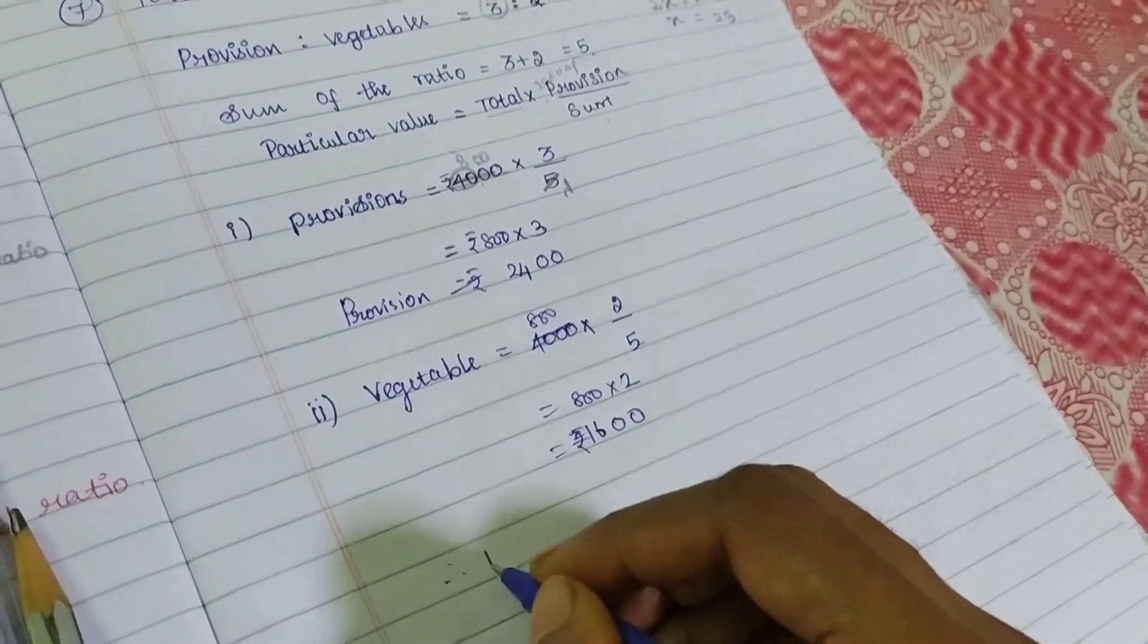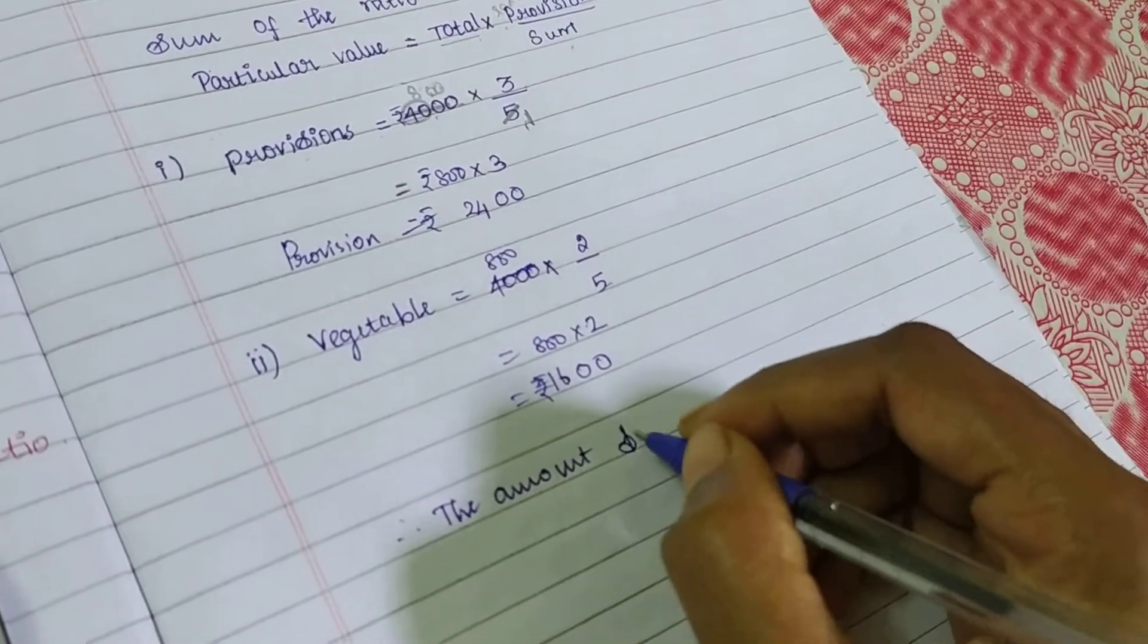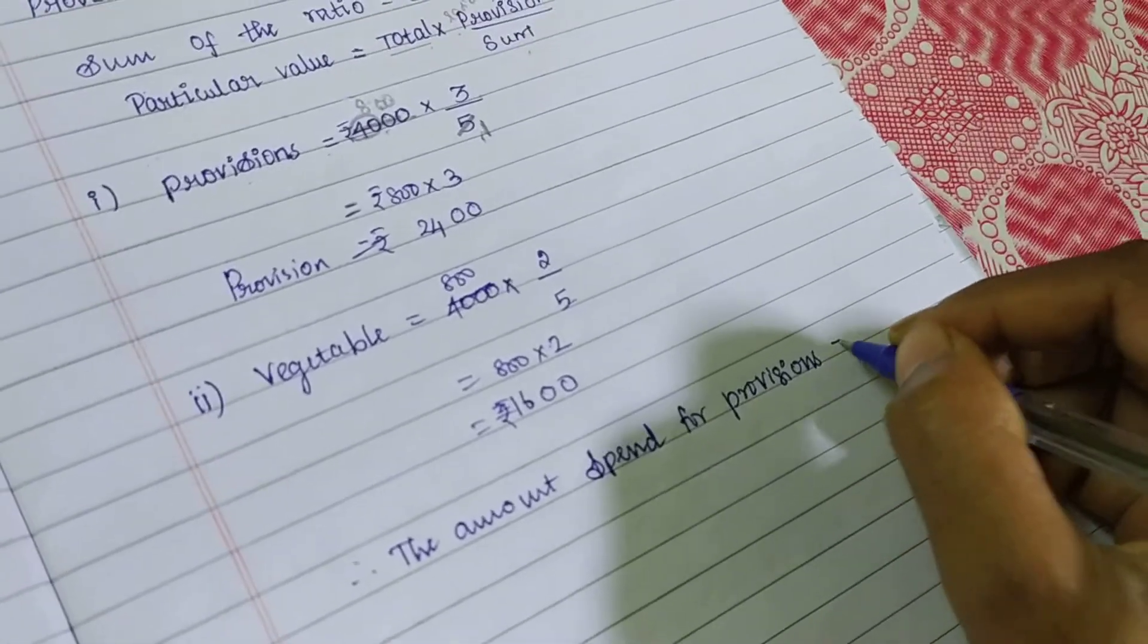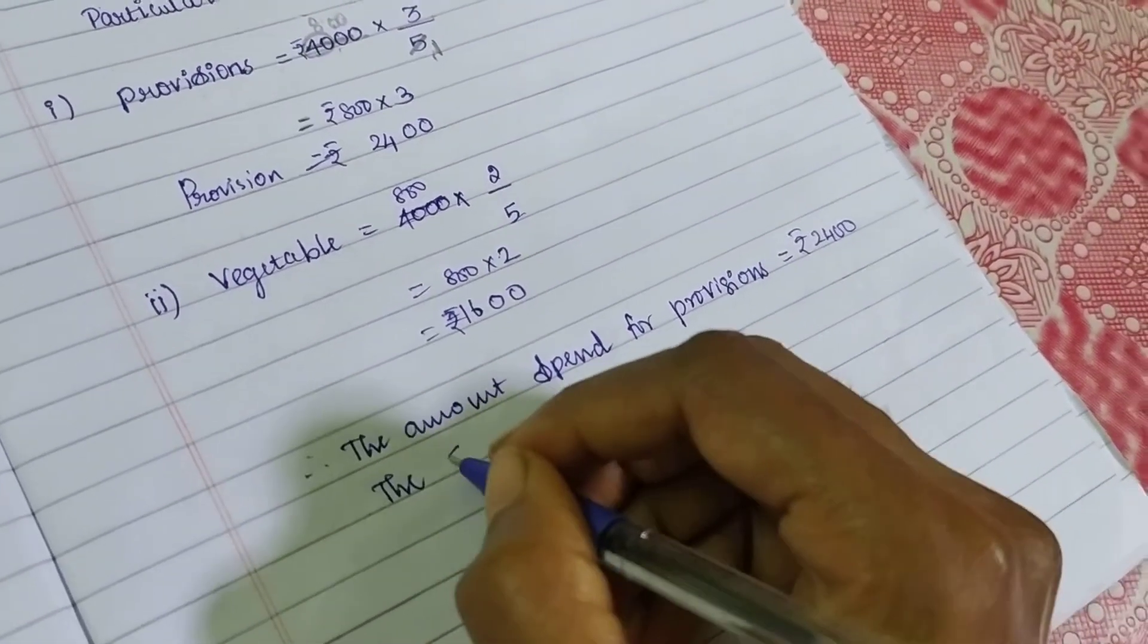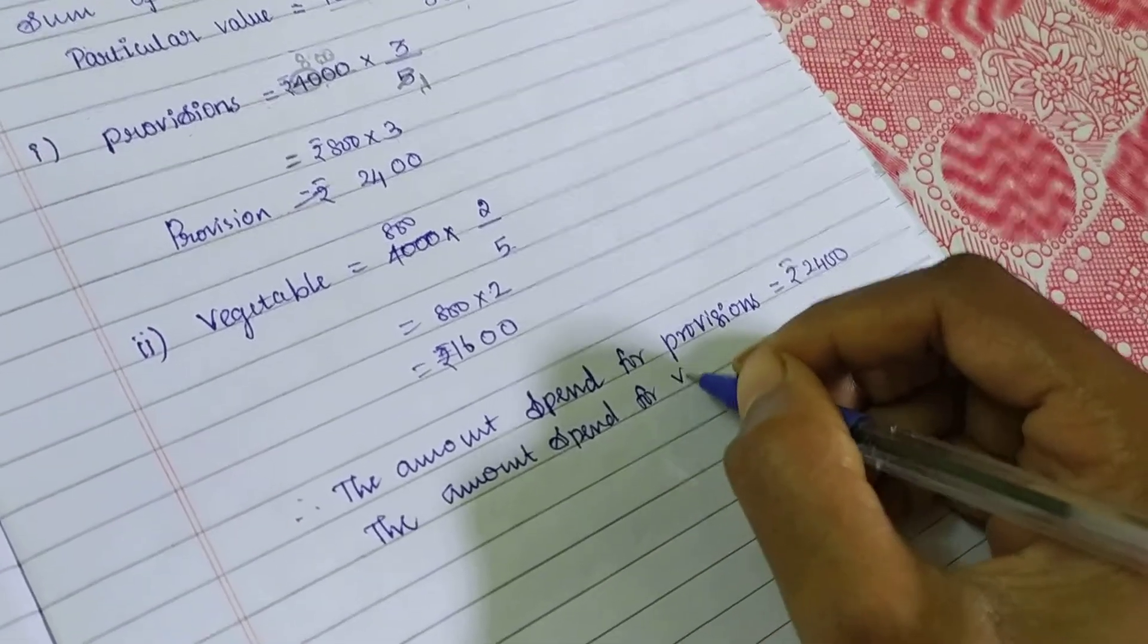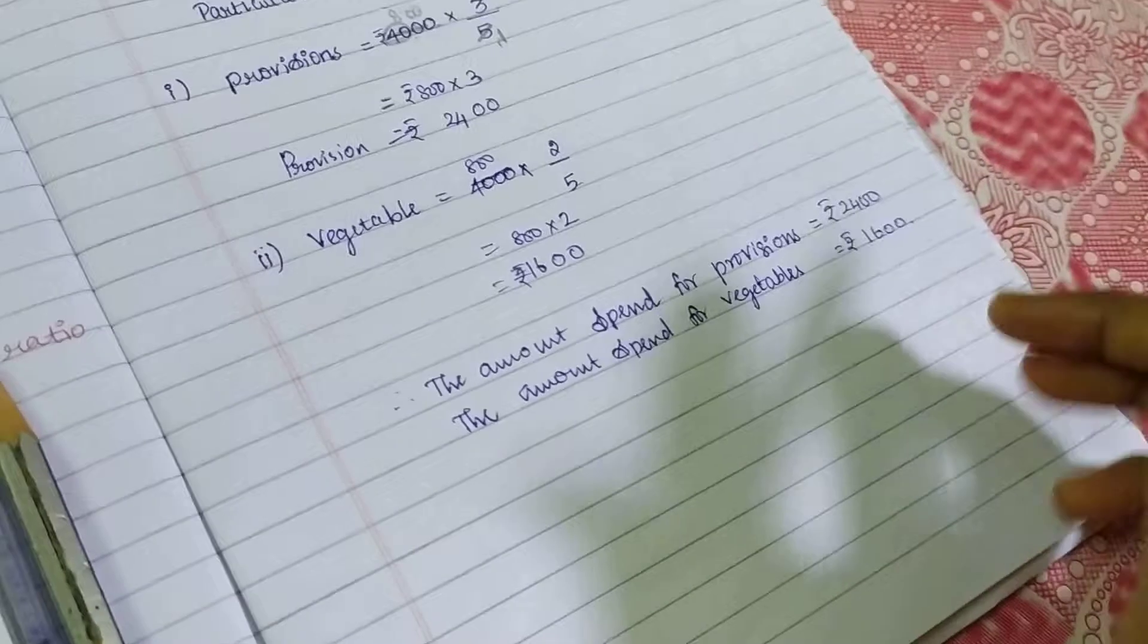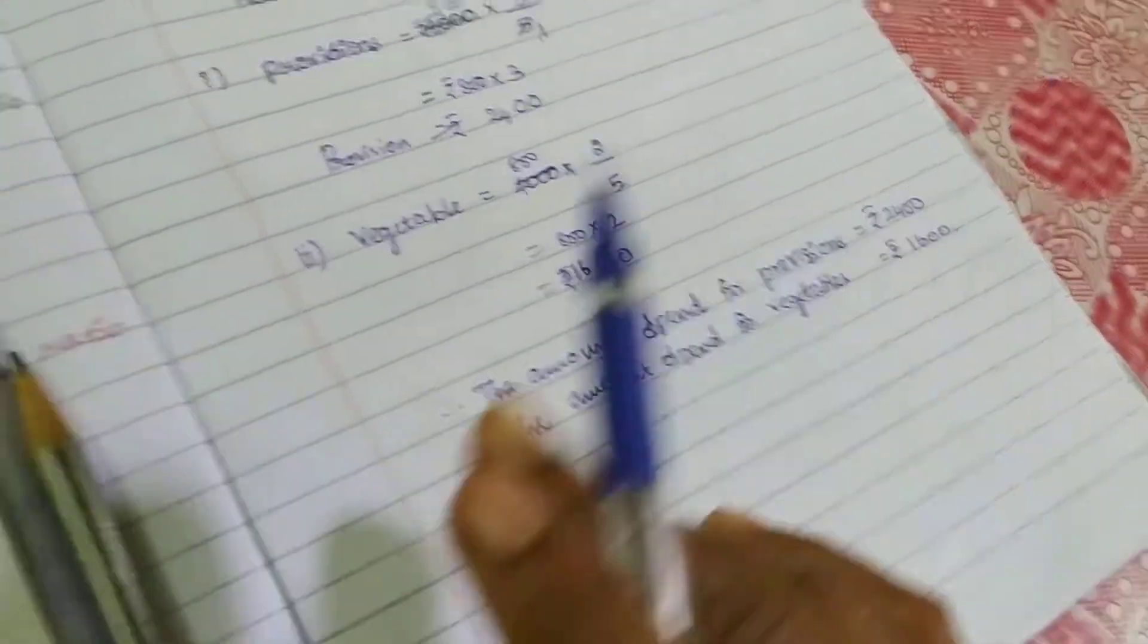So therefore, the amount spent for provisions is equal to rupees 2,400. The amount spent for vegetables equal to rupees 1,600. This month's amount. So 3 parts of your provision, 2 parts of your vegetables.